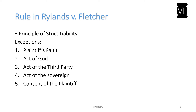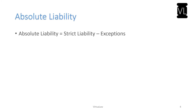The rule in Rylands versus Fletcher was followed continuously in many cases in the UK and in India. However, there was a deviation from strict liability after the Bhopal gas tragedy and the Sriram Foods and Fertilizers case, wherein the concept of absolute liability evolved. Absolute liability simply means strict liability minus exceptions — that equation captures the key distinction.